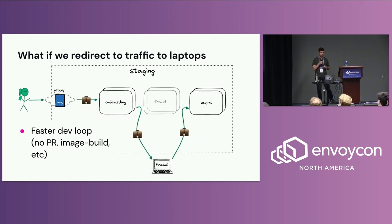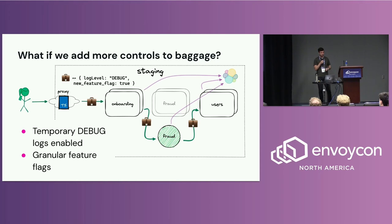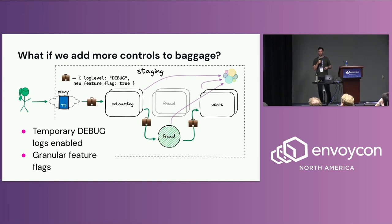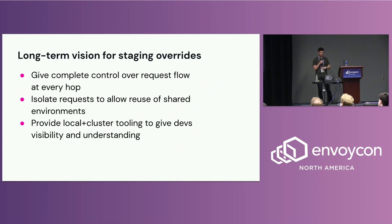Another thing we've been exploring: what if we redirect traffic to laptops rather than just offloaded pods deployed to staging? If we embed something in the metadata to redirect to your own laptop, you could have a much faster PR iteration cycle — no need to push up a pull request, wait for a container image build, or wait for a deploy. You can hit it straight to your own computer. We've also been exploring what else we could include in the baggage — for example, a 'log level debug' field that, just for the duration of your request, increases log verbosity. You could also optionally turn on feature flags valid only for your request.